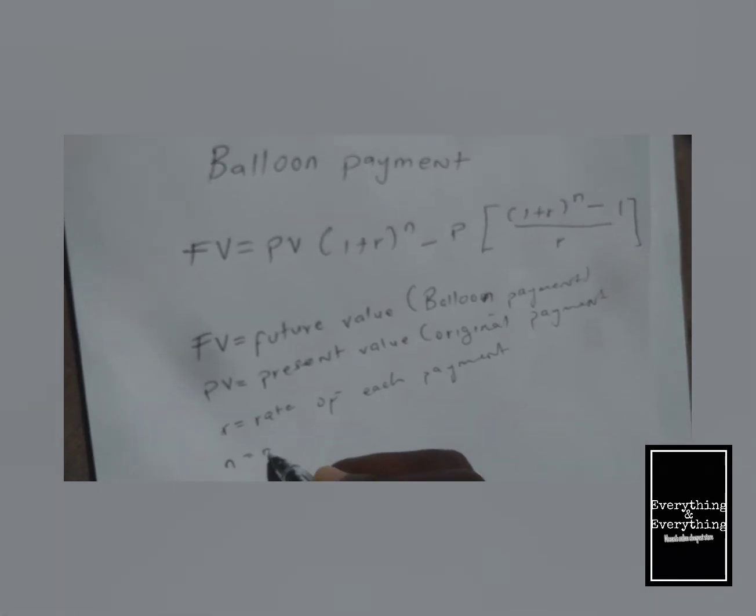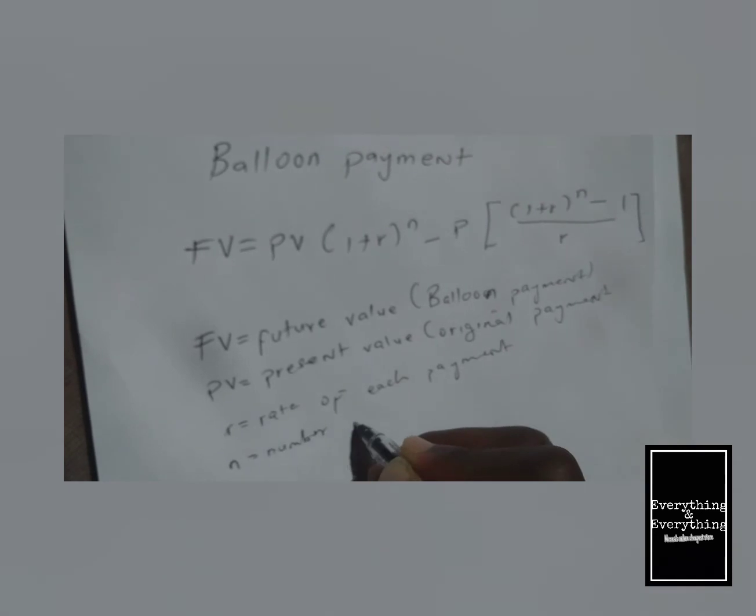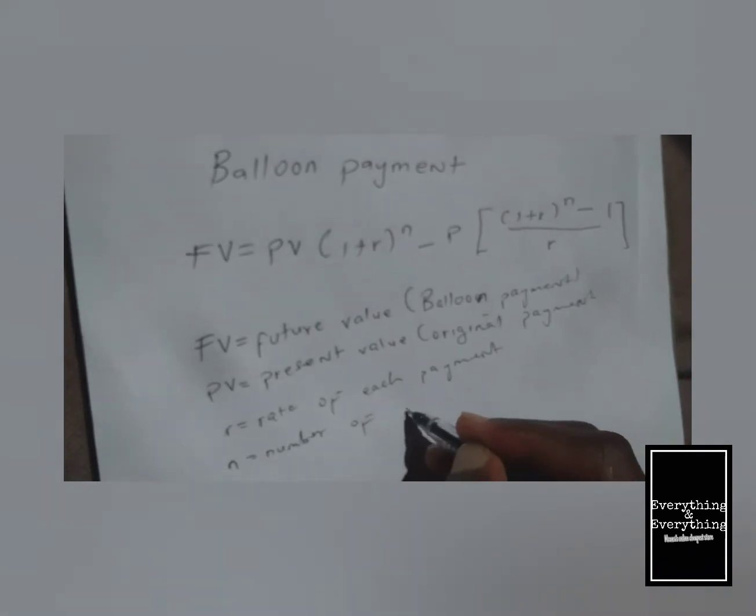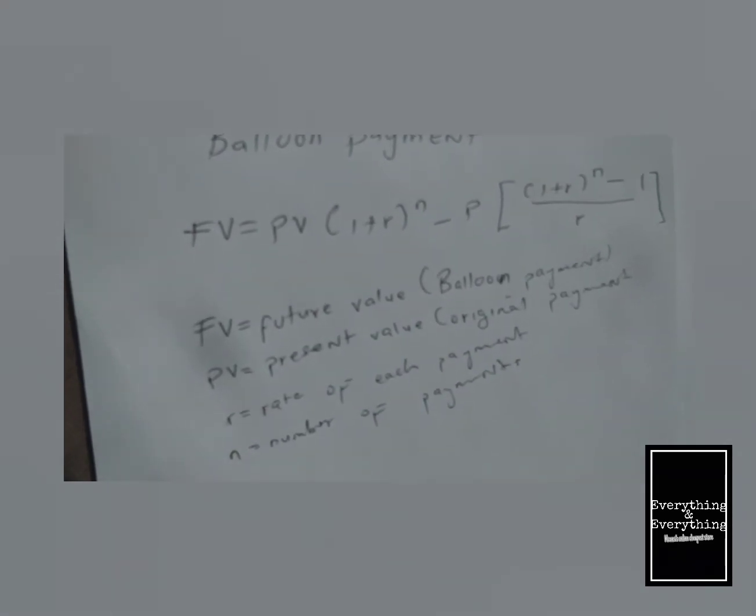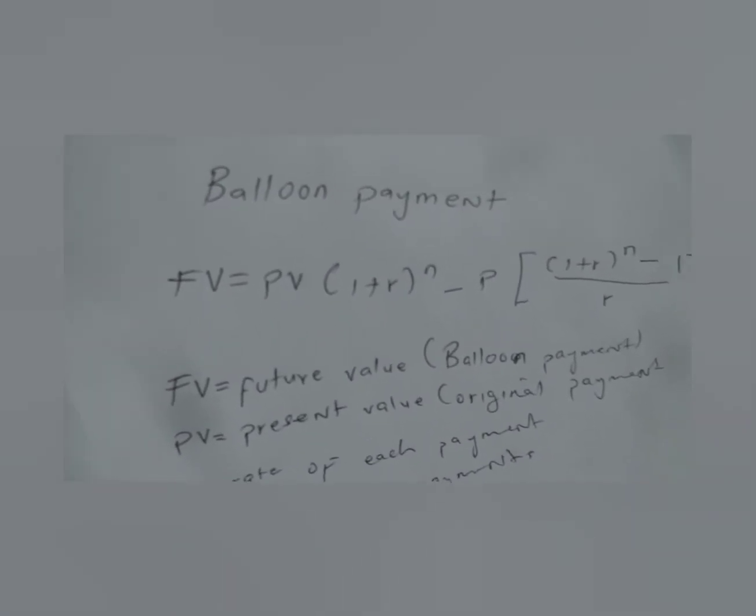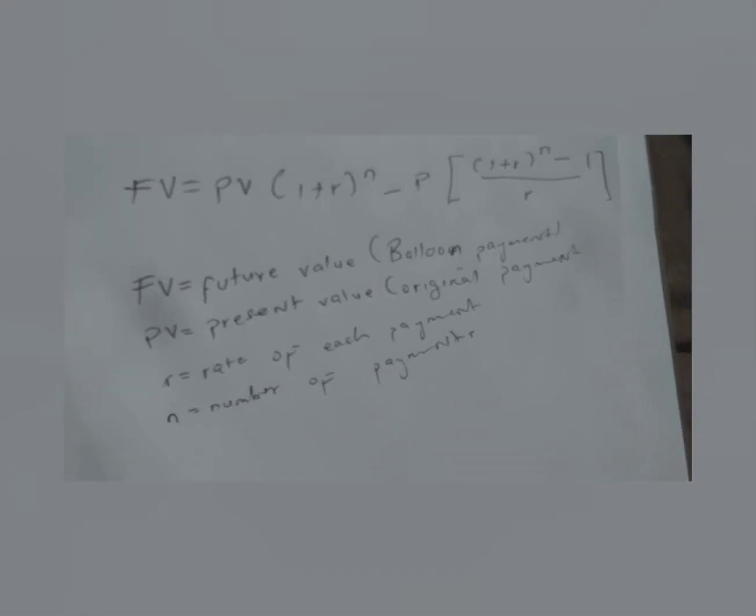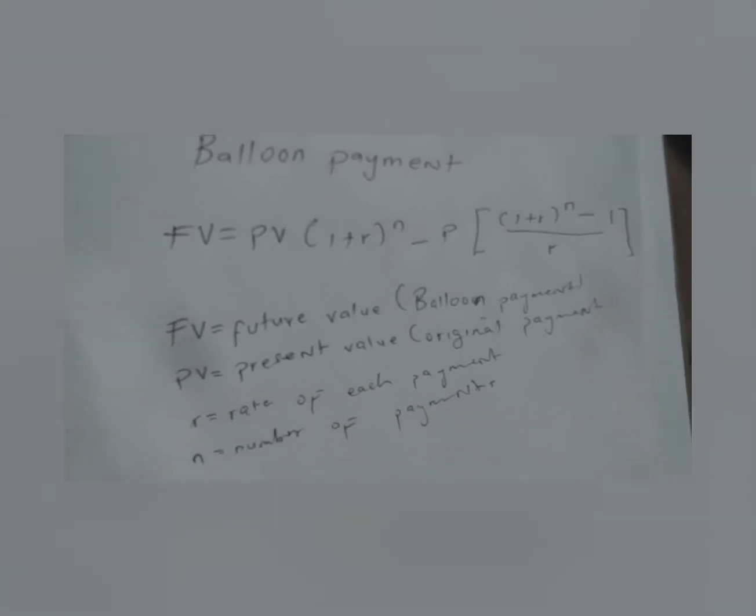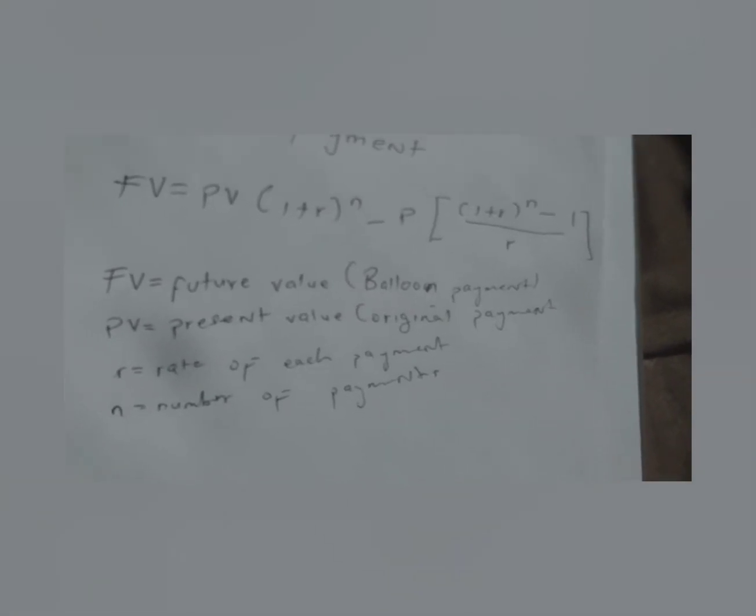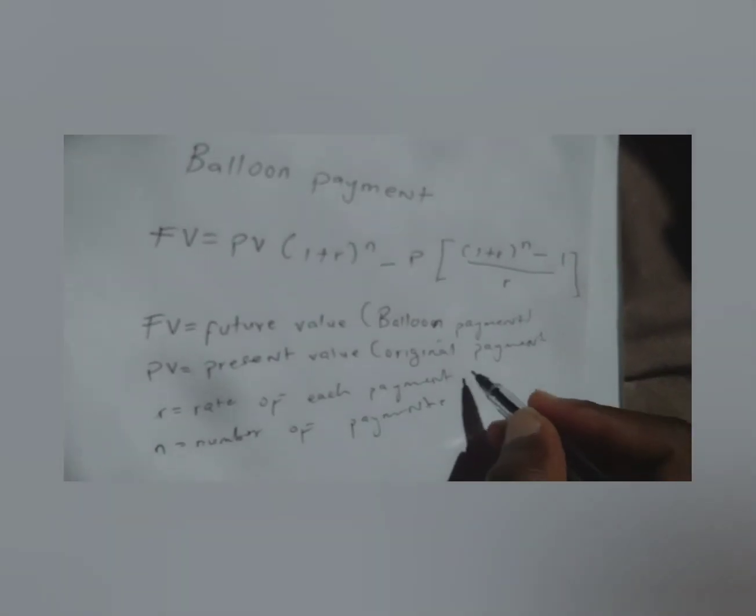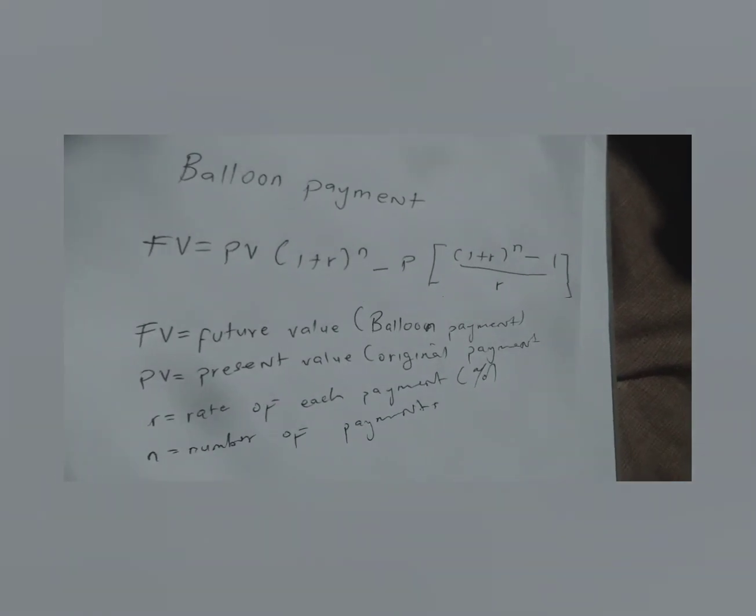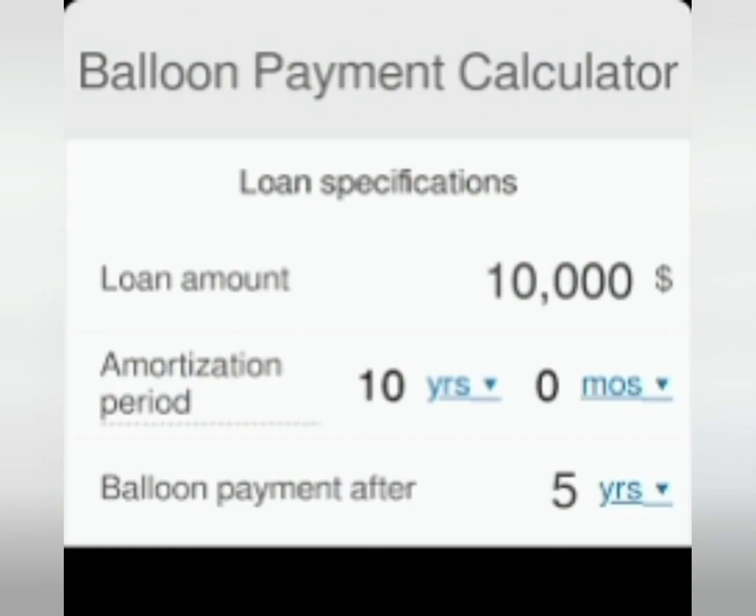Our n, this is the number of payments. So this is how you calculate your balloon payment. Just make sure that you understand what each value stands for and that this is the percentage. You can use your calculator from Google.